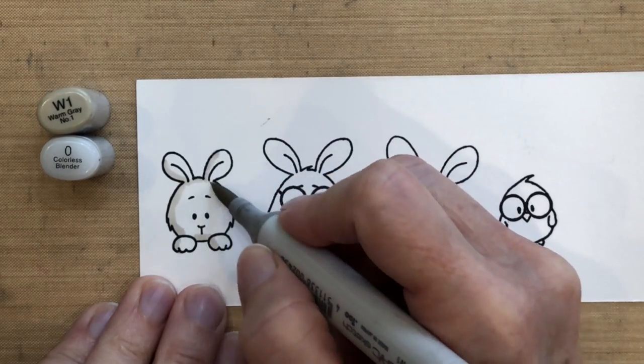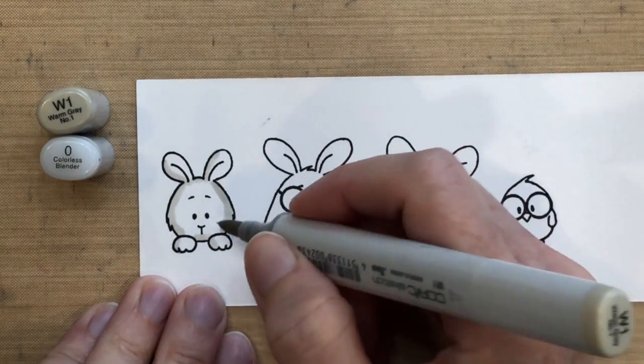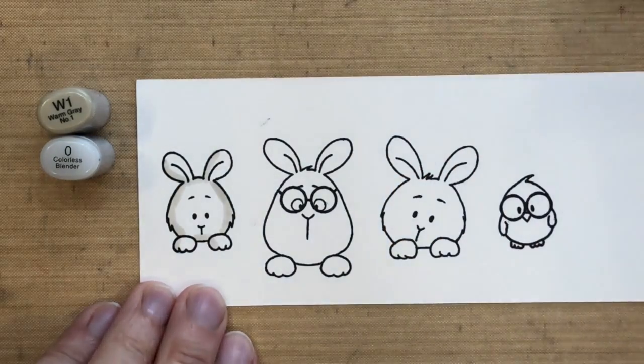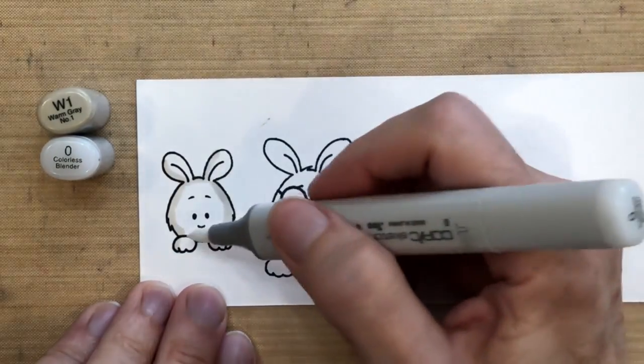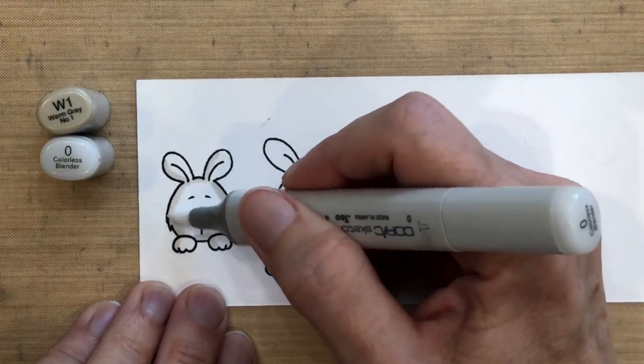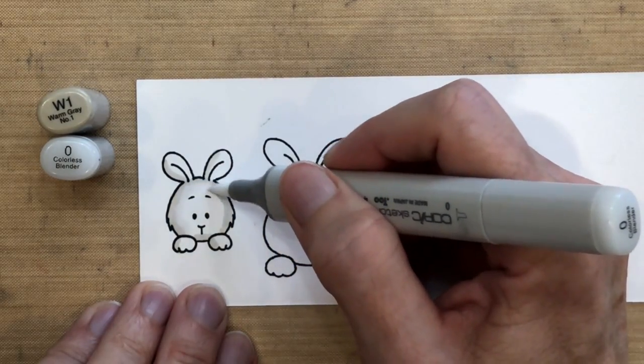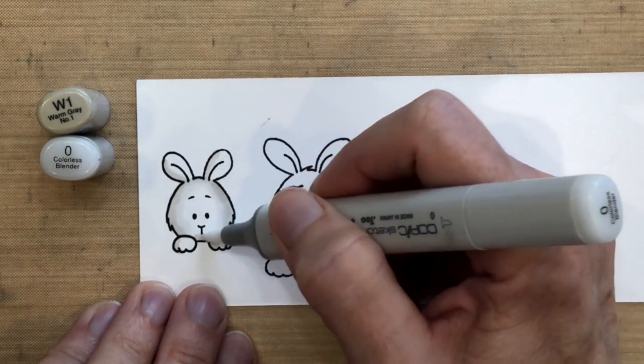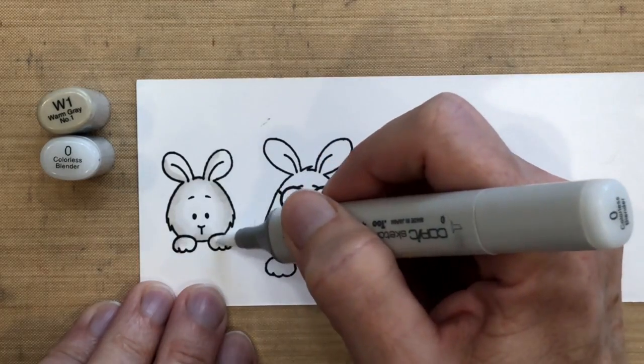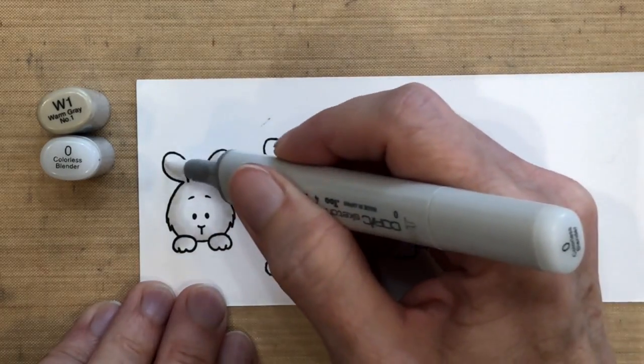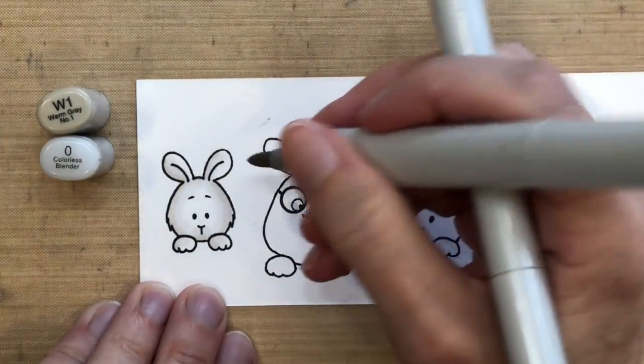For his little paws, I just colored a little bit on the left side of each paw, so I didn't go all the way around it. So my reflection is always coming from behind me on the right, and that's sort of how I try to visualize it. And then I'm going to take my zero colorless blender and I'm going to quickly just go over the whole thing, and this will eliminate any lines from the W1 marker.